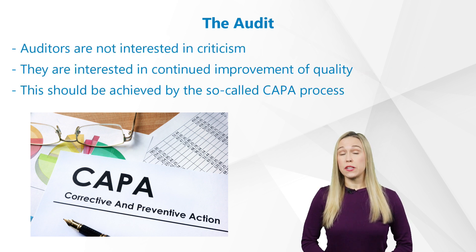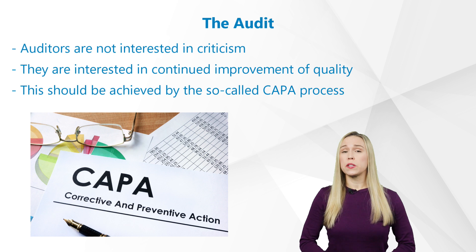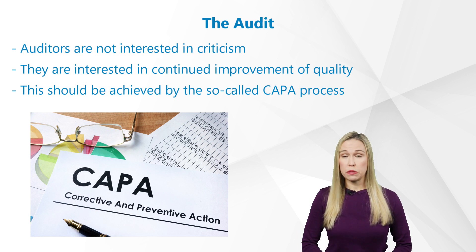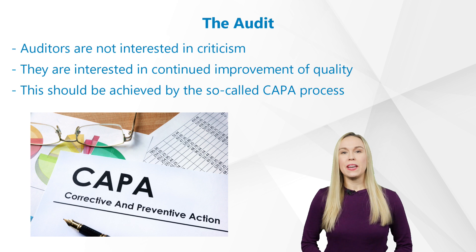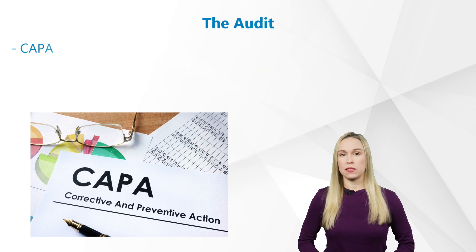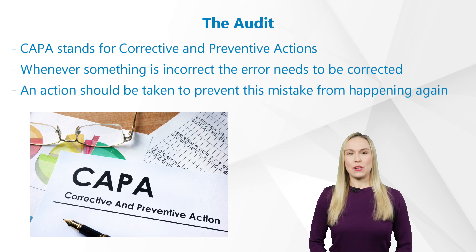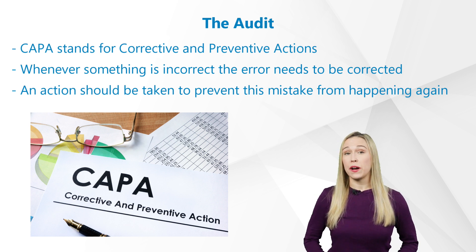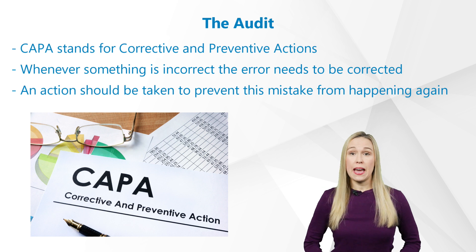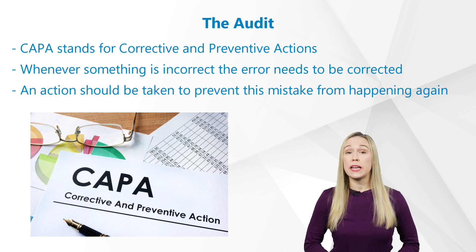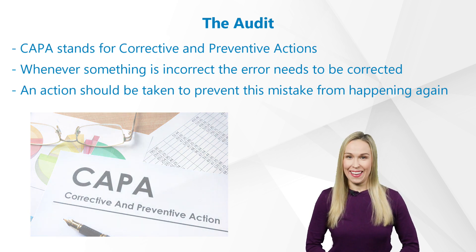Auditors are not interested in criticism, but they are particularly interested in continued improvement of the quality of the study or trial. This should be achieved by the so-called CAPA process. CAPA stands for corrective and preventative actions. Whenever something is incorrect, as is the case in every trial, the error needs to be corrected, and an action should be taken to prevent this mistake from happening again.